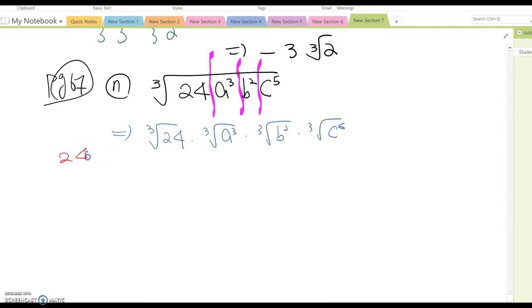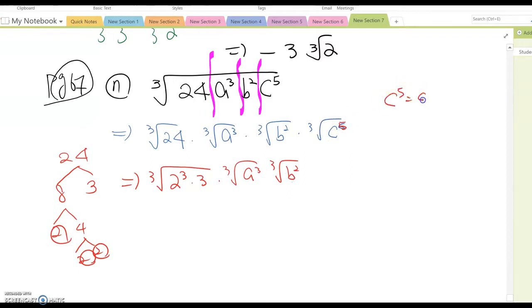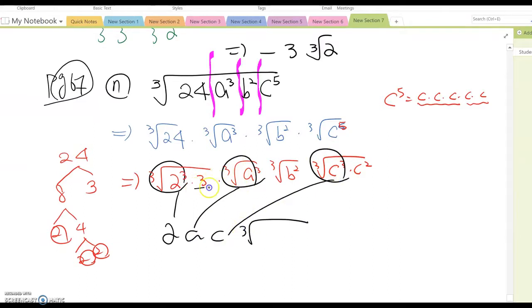For 24, you need to find its prime factorization: 8 times 3, which is 2 times 4, and 2 times 2. We have 2 cubed here. Rewrite this as cubic root 2 cubed times 3, and cubic root a cubed. For c to the fifth, c fifth means c cubed times c squared. Take out all the cubic ones as single numbers: 2, a, c. The remaining terms 3, b squared, and c squared must stay inside.